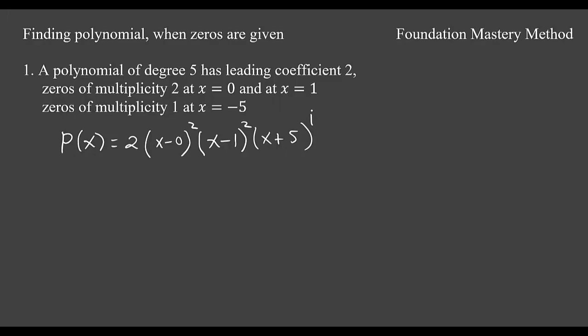So we got our polynomial. If you just write more simplified form, you get 2x squared, and then (x minus 1) squared, and then (x plus 5). We are done.